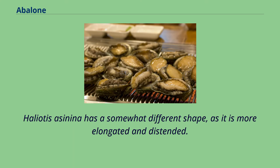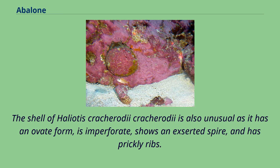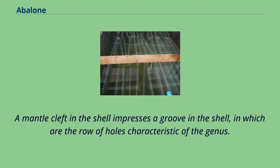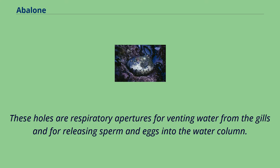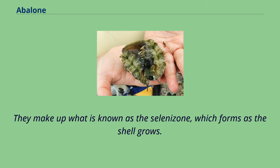Haliotus asinina has a somewhat different shape, as it is more elongated and distended. The shell of Haliotus coccoradiata is also unusual as it has an ovate form, is imperforate, shows an exerted spire, and has prickly ribs. A mantle cleft in the shell impresses a groove in the shell, in which are the row of holes characteristic of the genus. These holes are respiratory apertures for venting water from the gills and for releasing sperm and eggs into the water column. They make up what is known as the selenizone, which forms as the shell grows.